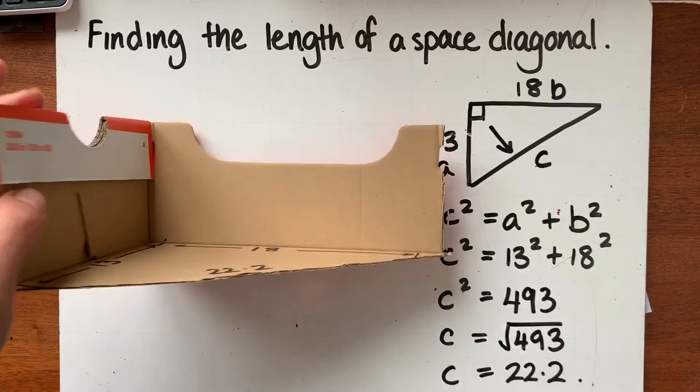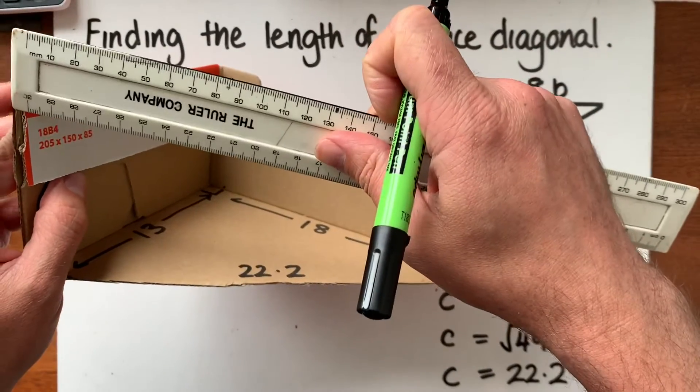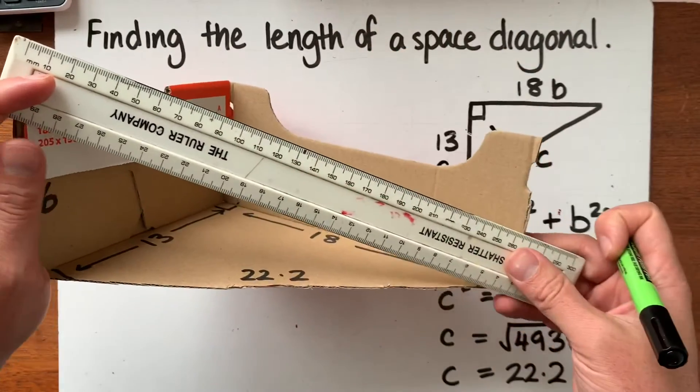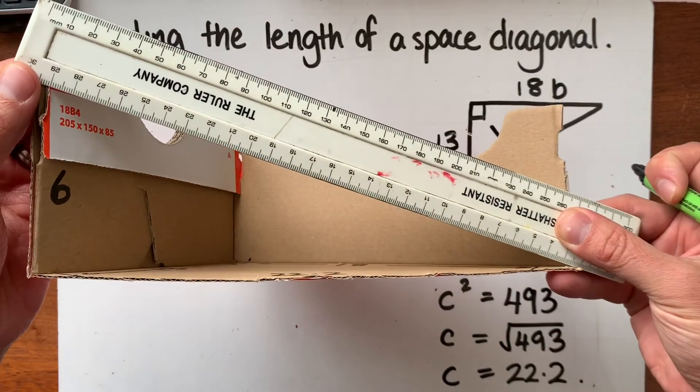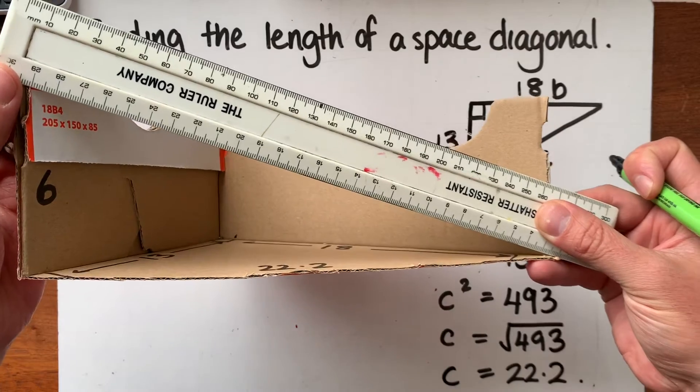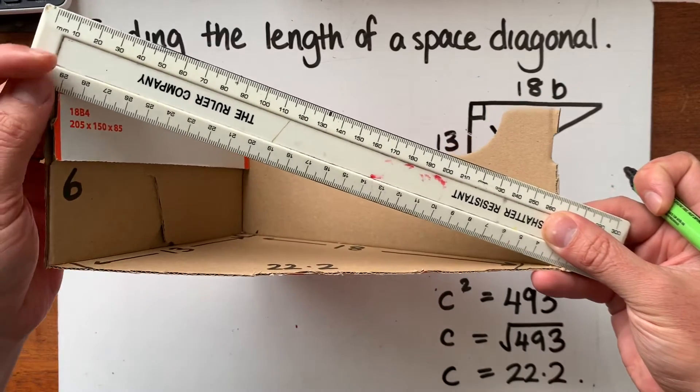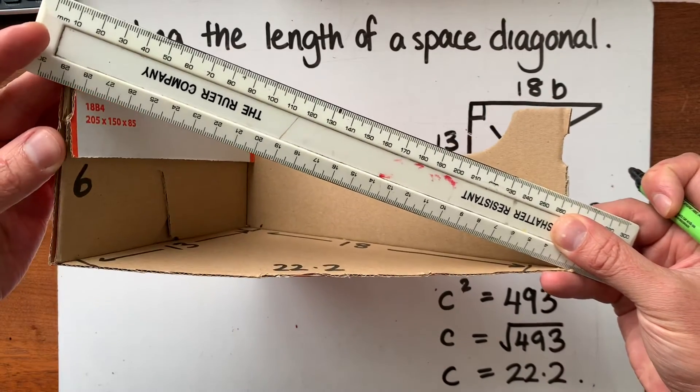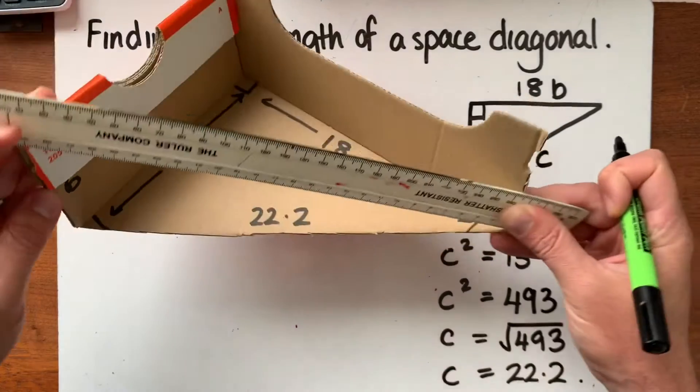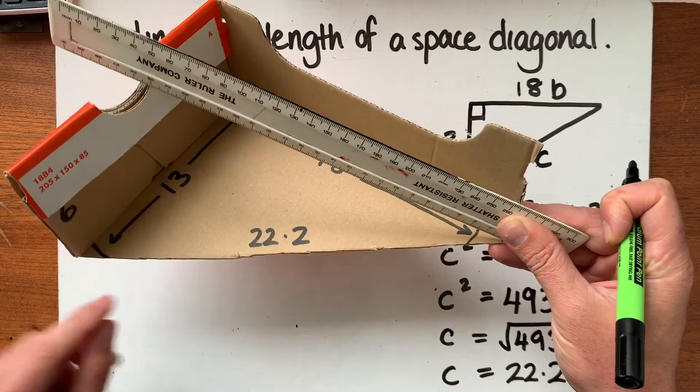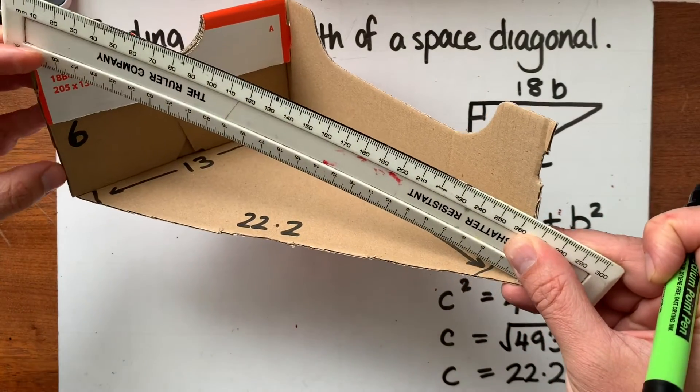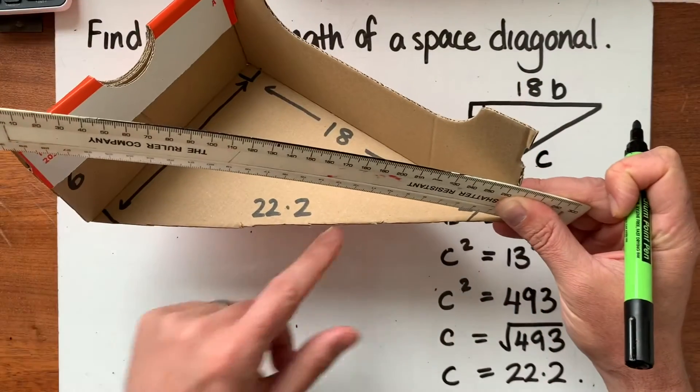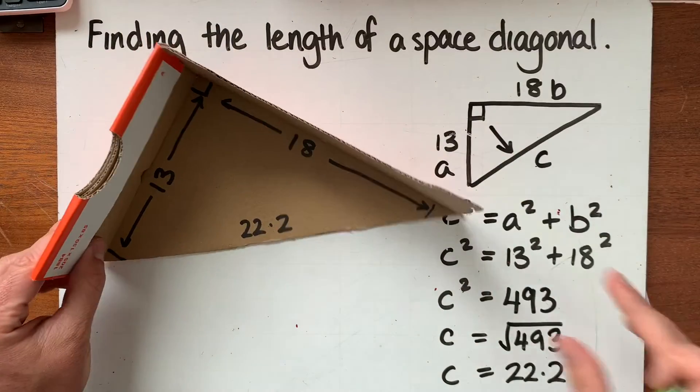We are finding the length from this top corner to this bottom corner down here and you can see hopefully that that still creates another right angle triangle where we've got the height as one of the sides of the right angle triangle and we've got the face diagonal as the other side. So we've got a right angle triangle where we've got the height of 6 and then the face diagonal as 22 of the other side.